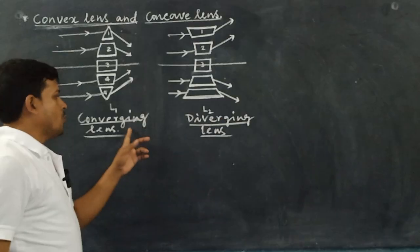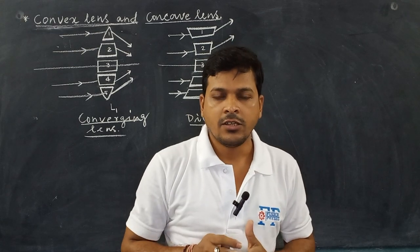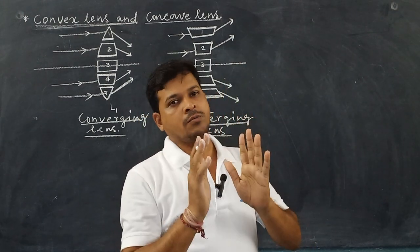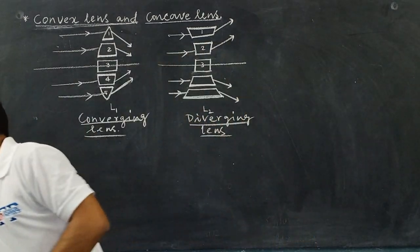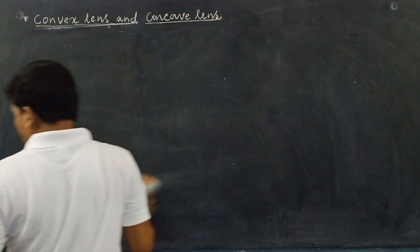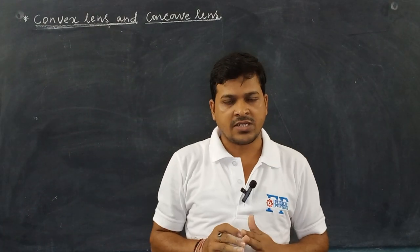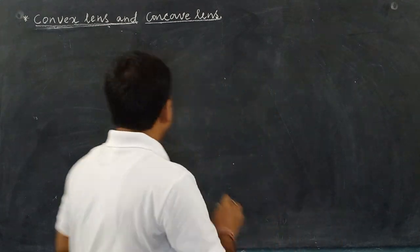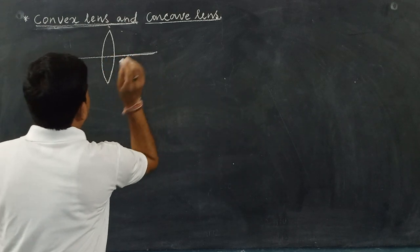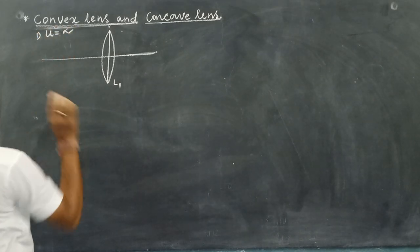This convex lens is also used as a magnifying glass, which is a very important question. When a convex lens acts as a magnifying glass, give the corresponding ray diagram. We have to learn the different formations of image of an object placed in front of the convex lens. The linear magnification may be less than one, equal to one, or greater than one. Object distance is denoted by U and image distance by V. In the first case, U equals infinity.